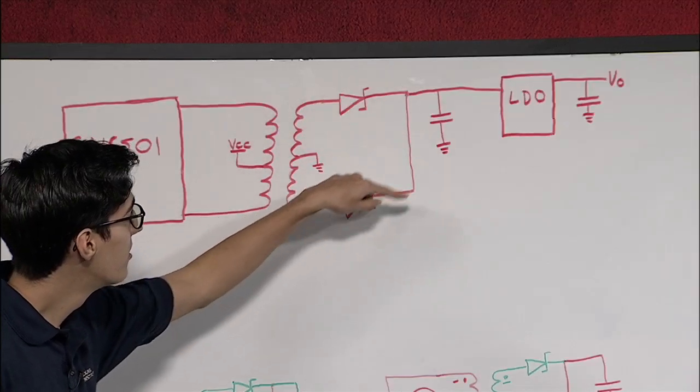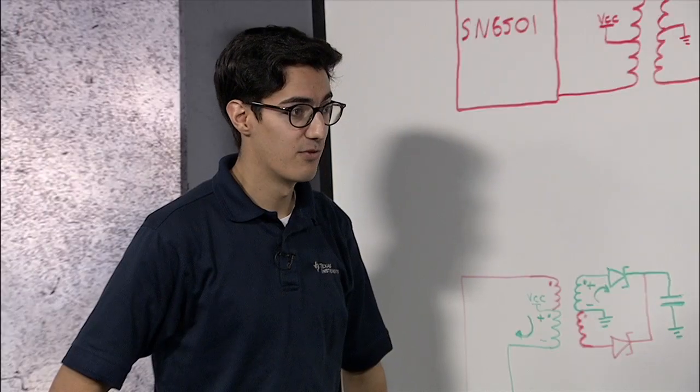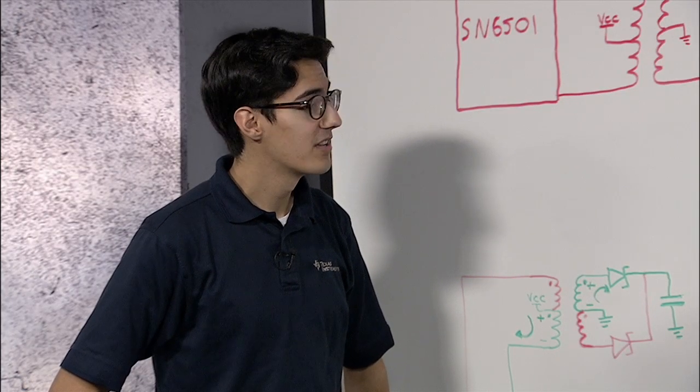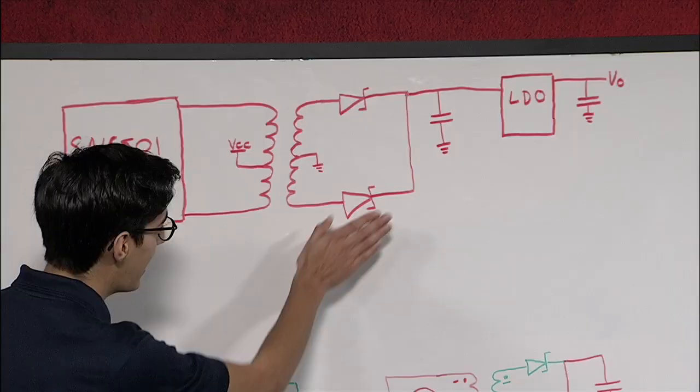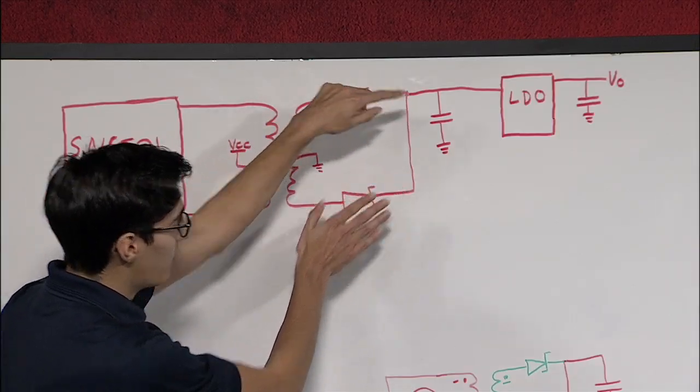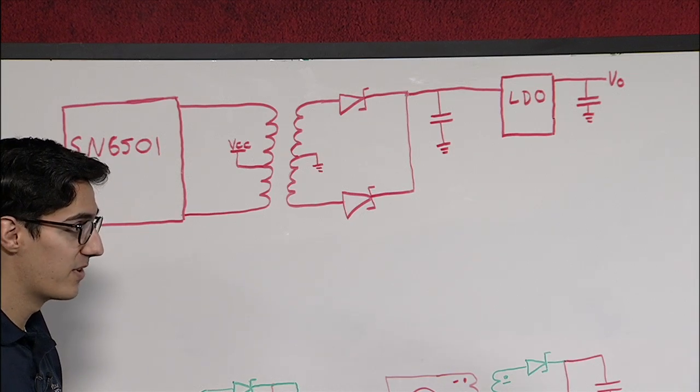At the output of the transformer, we use a full-wave rectifier, which converts from a square wave to a DC voltage. This lets us utilize both the positive and negative portions of the waveform, whereas if we used a half-wave rectifier, charge would only be getting to the output half the time, and it wouldn't be as efficient.